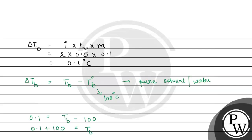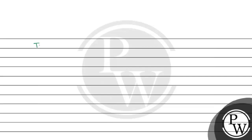From here we will have 0.1 plus 100, and this will be equal to Tb. Tb is the boiling point of water in 0.1 molal AgNO3 solution. So Tb will be equal to 100.1 degree Celsius.